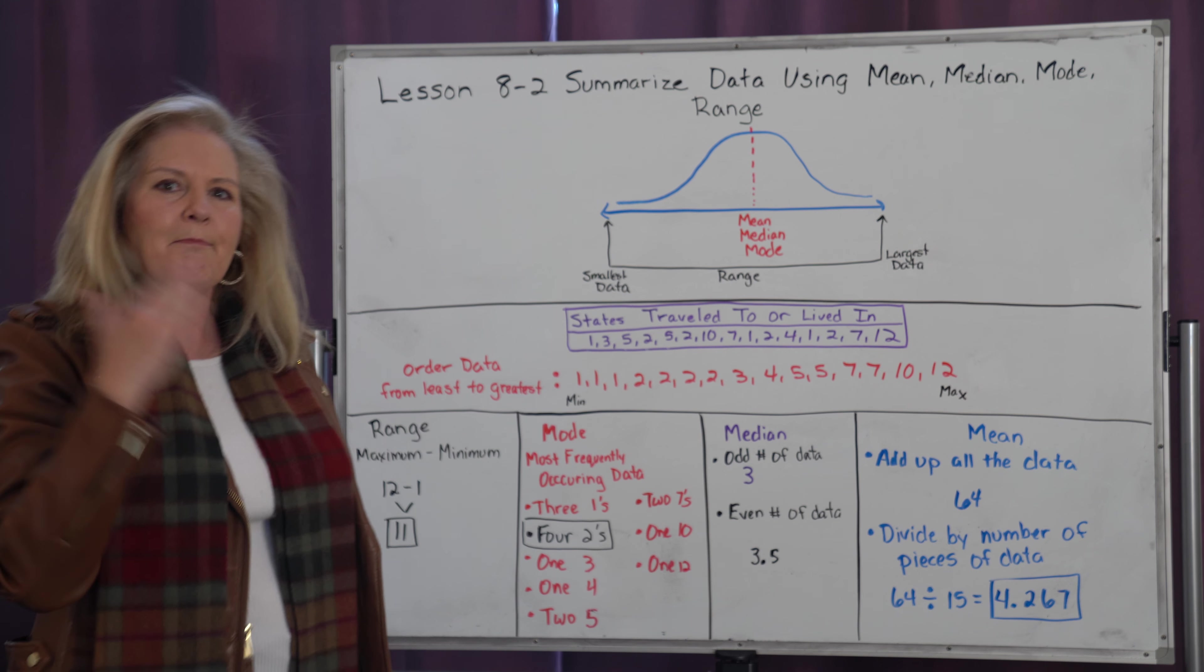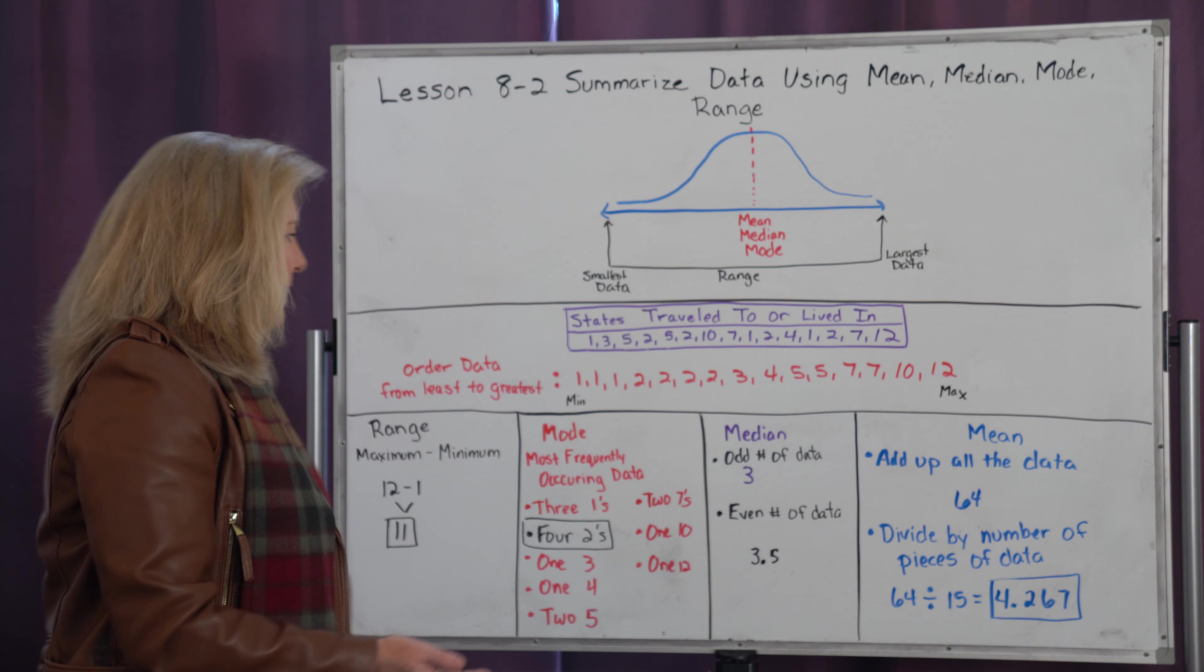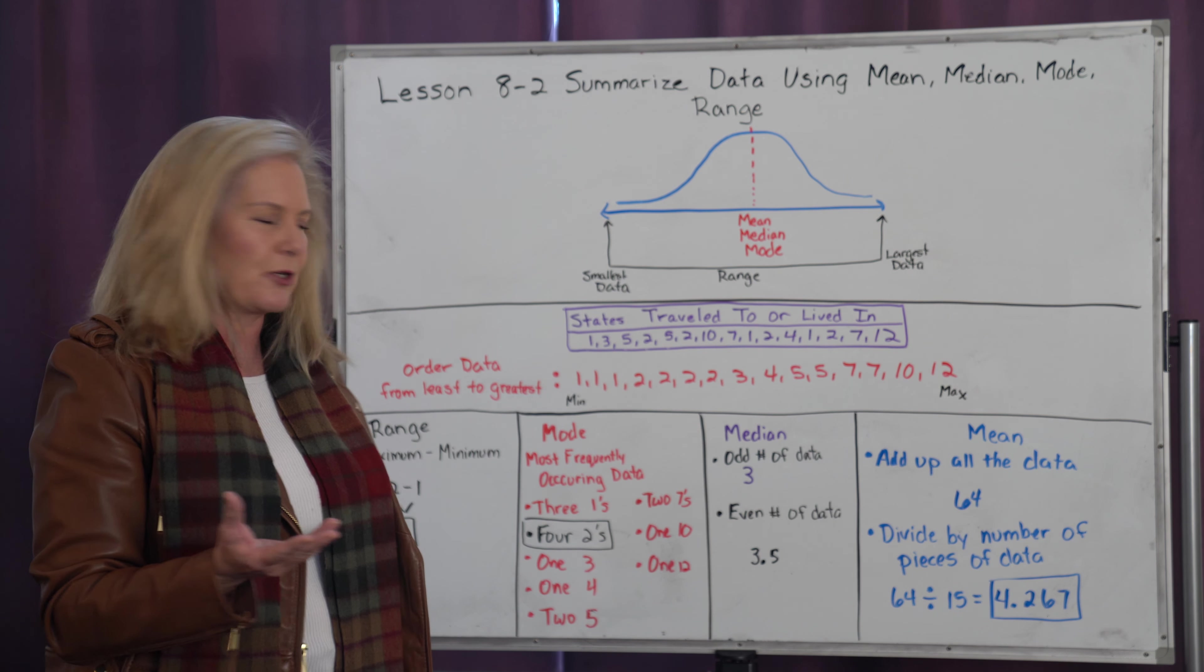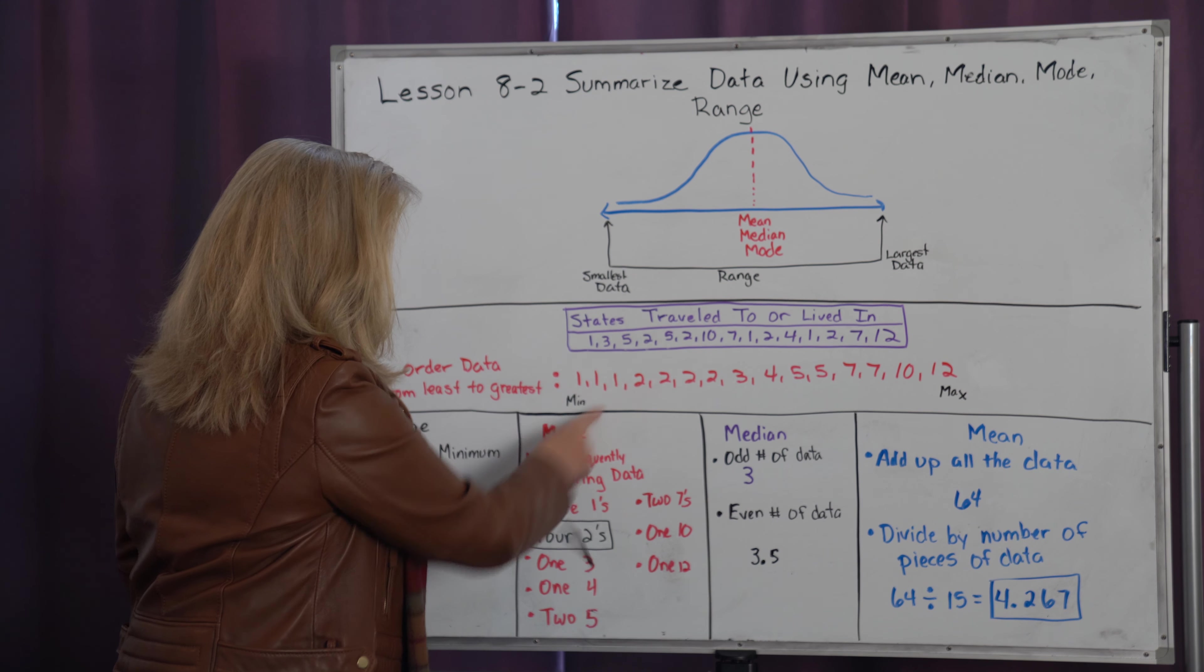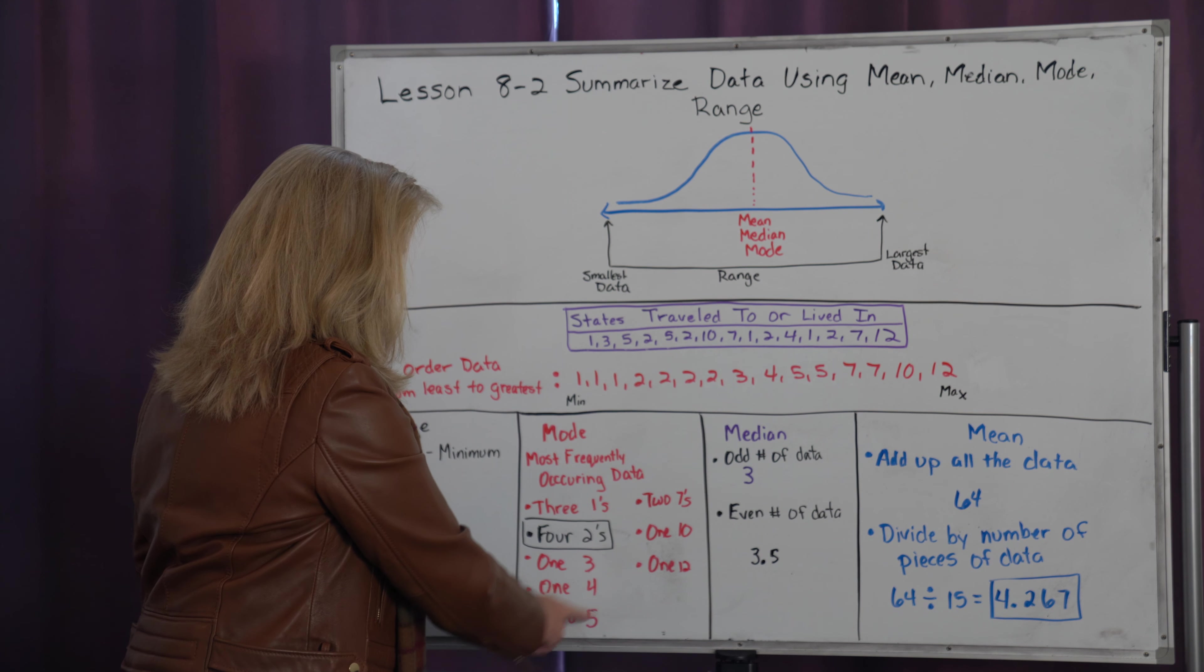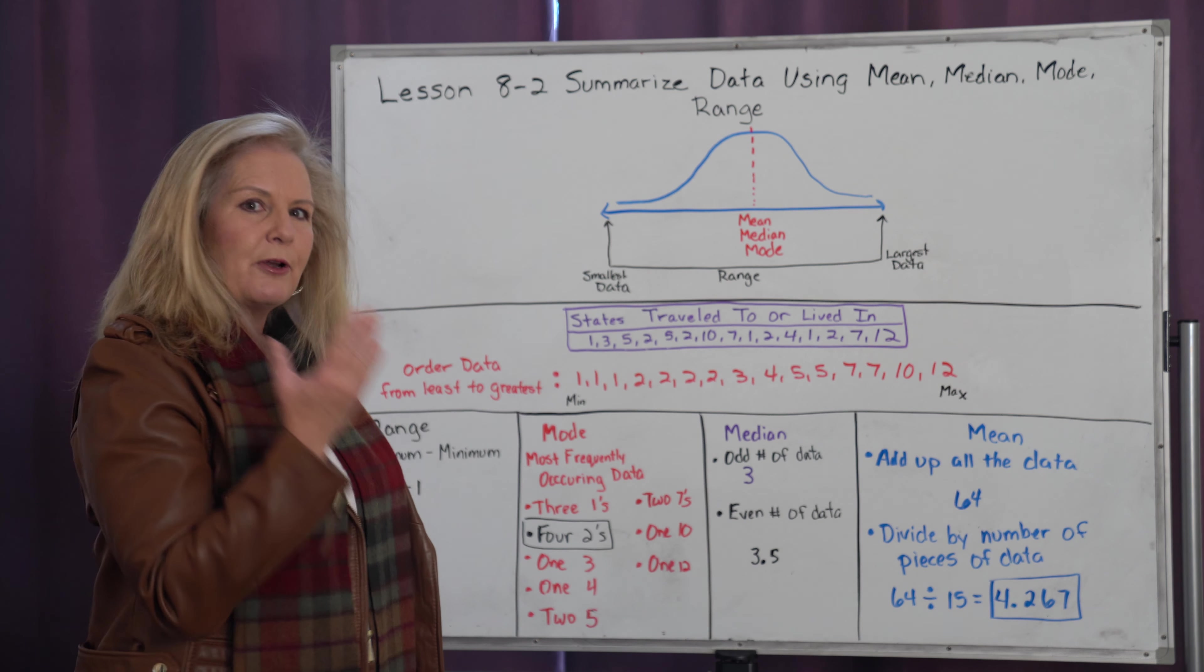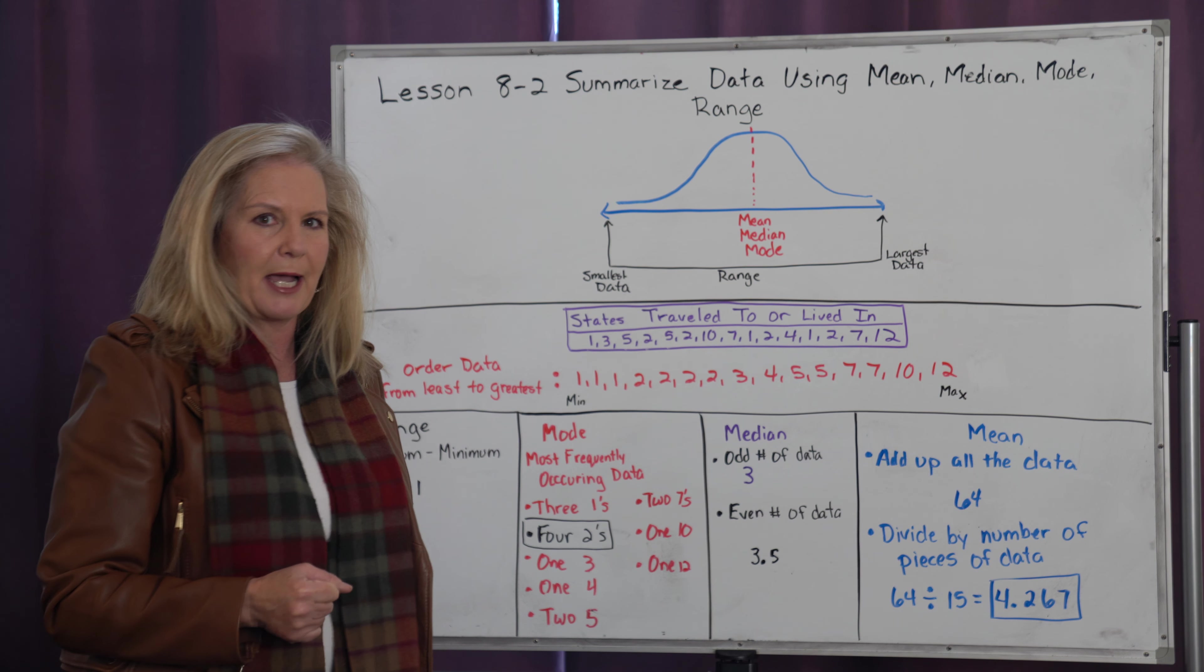My mode is the most frequently occurring piece of data. When I look at this, because it's ordered, I can easily see how many times each of the answers were responded. I have three ones, four twos, one three, one four, two fives, two sevens, one ten, and one twelve. Clearly, the number that most often happens is four, and that would be my mode.